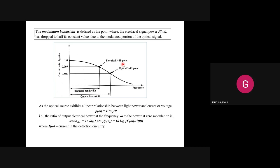Understand the main difference between electrical and optical 3 dB points: the optical 3 dB point depends on the electrical 3 dB point, which itself depends on the normalized maximum value of 1 - the current ratio i/i₀, the gain value. We plot a semi-log plot of gain in dB versus frequency. As the optical source represents a linear relation between light power and current or voltage, if the electrical signal decreases or increases by 3 dB, the optical signal follows accordingly, but remains below the electrical 3 dB point.